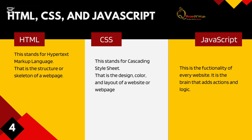CSS stands for Cascading Style Sheet. CSS is what is behind the design, the color, and the layout of your website or web app. When you visit a website and it has different colors and beauties, that is the work of CSS — it sets the font, the colors, the position of buttons like the login button at the top right corner.